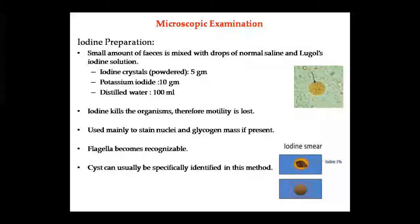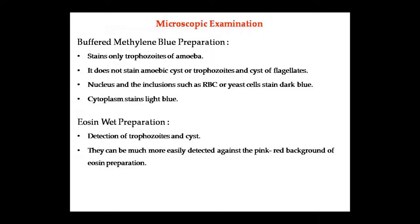For iodine preparation, Gram's iodine is added to a saline preparation to examine nuclear structure. It will show chromatin granules and stain amoebic cysts, showing glycogen vacuoles as brown color. However, iodine kills parasite motility so motility cannot be observed. For buffered methylene blue preparation, it is used as a wet preparation to identify amoeba, eosinophils, and trophozoites.